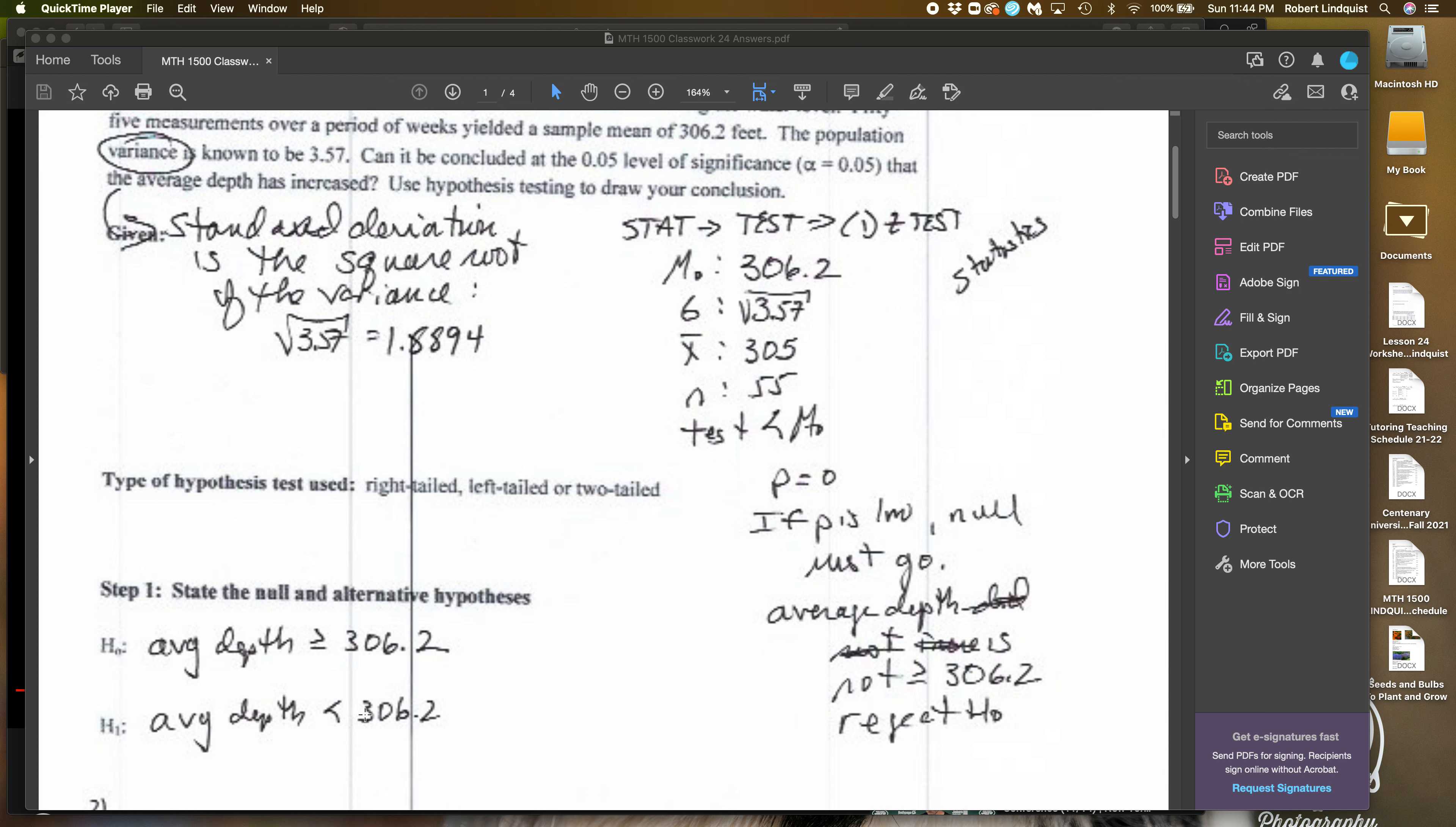Then we're going to go to the standard deviation, which we said was the square root of 3.57. Then we go to the mean they mentioned in the problem, which is 305. And then the n in the problem, which is they tested it 55 times, so it's 55. And as far as the test goes, you choose the test that matches the alternative hypothesis.